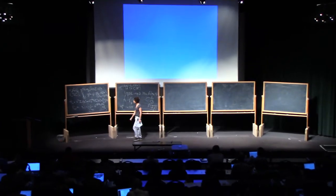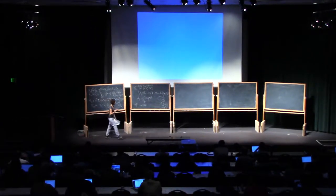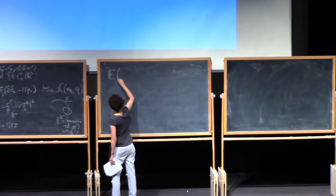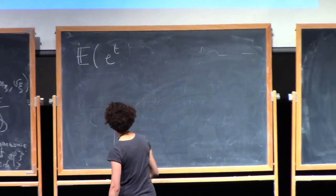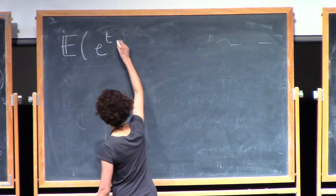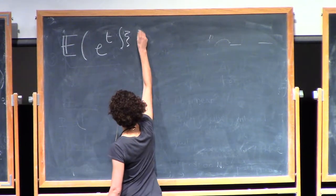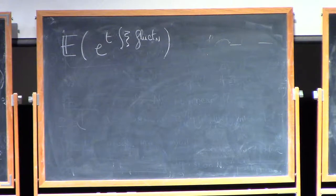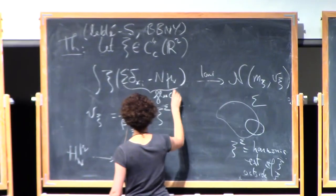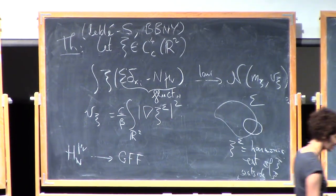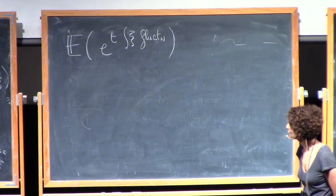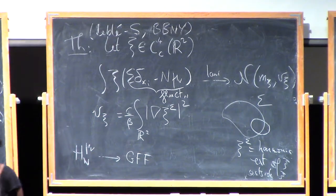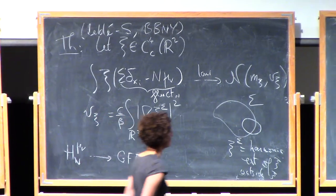The method I am going to present is based on the idea of a change of variables. The starting point, as Gaetan described, is the method introduced by Johansson: you want to compute the Laplace transform of the fluctuations. The Laplace transform is nothing else but the expectation of exp(T times integral of xi) — I call this Fluct_N. If you manage to show that the Laplace transform converges to that of a Gaussian with appropriate mean and variance, then you will be done.